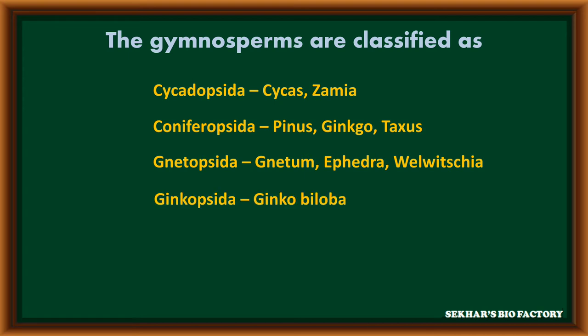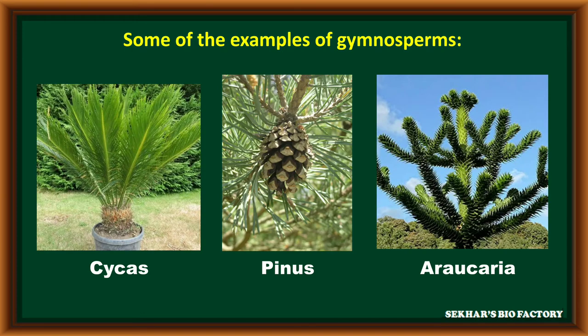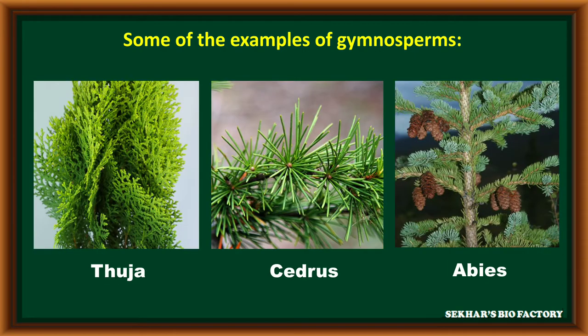The fourth group is Ginkopsida, e.g. Ginkgo biloba. Some of the common examples for Gymnosperms: Cycas, Pinus, Araucaria, Thuja, Cedrus and Abies.